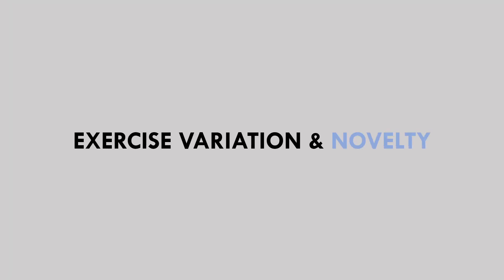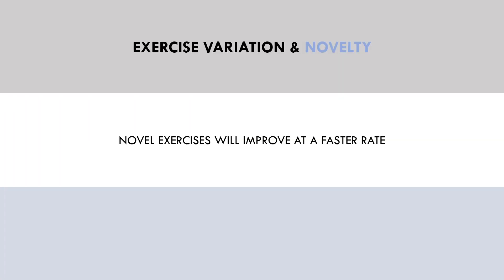Another factor influencing lifting performance and rate of progression is the novelty of the exercise. Strength is not only influenced by muscle size but also by neural efficiency. When a trainee introduces a new exercise into their program, or an exercise they haven't performed for a while, they will initially see rapid improvements in lifting performance. These initial improvements primarily come from neural adaptations rather than muscle growth.